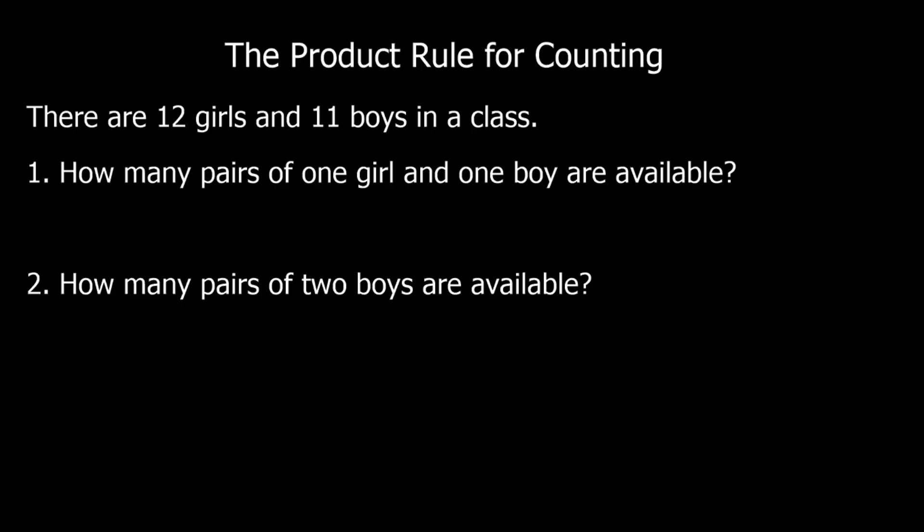There are twelve girls and eleven boys in the class. How many pairs of one girl and one boy are available? So one girl, one boy. So there's twelve of the first option, eleven of the second option. So twelve times eleven is, well, twelve times ten is one twenty, plus a twelve, so one hundred and thirty-two.